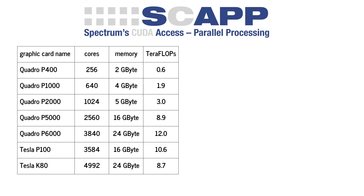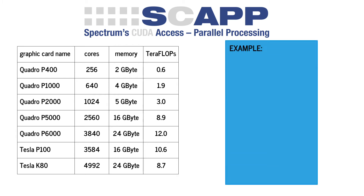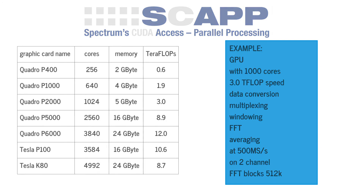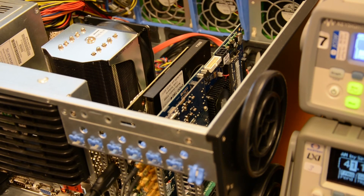SCAP allows fast data transfer to scalable GPUs with hundreds or even thousands of processing cores, memories of several gigabytes, and calculation speeds of up to 12 teraflops. A small GPU with 1k cores and 3 teraflops calculating speed is already capable of doing continuous data conversion, multiplexing, windowing, FFT, and averaging at 500 mega samples per second on two channels with an FFT block size of 512k — and it can run for hours. Let's have a look at this example.